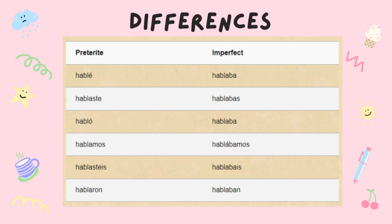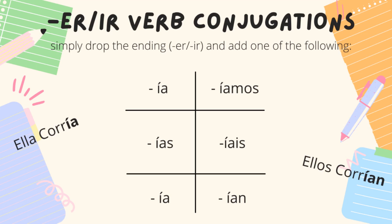Now, you can see the difference between preterite and imperfect. Let's take a quick look at the ER and IR verb conjugations. Again, you simply drop the ER or the IR and add one of the following endings. Remember, these are only for regular verbs.